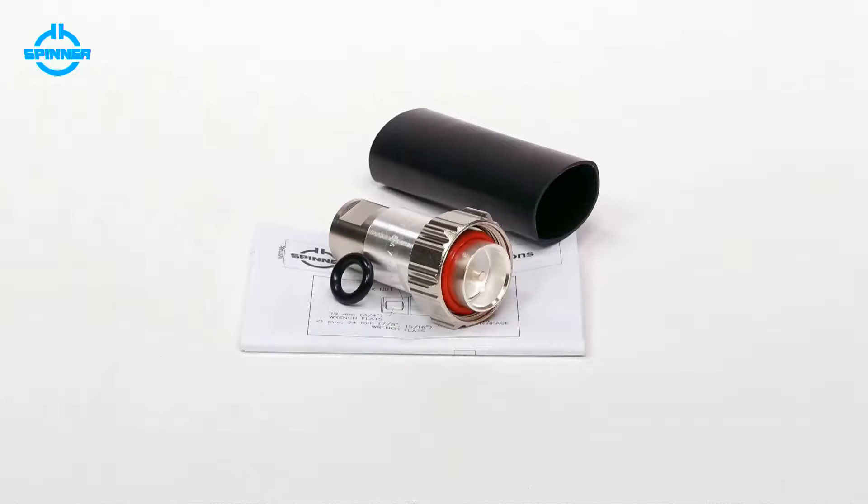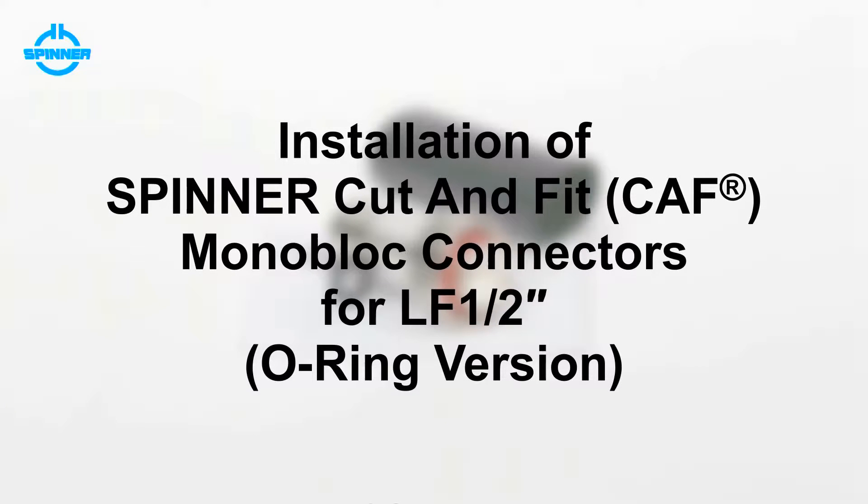This video shows the installation of Spinner Cut & Fit Monoblock connectors for LF ½ inch Analy corrugated foam cable using a Spinner trimming tool.